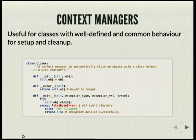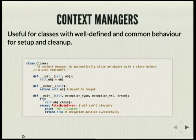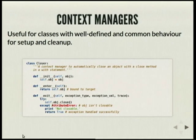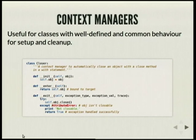This is an example of a context manager where we're closing connections. When entering the context, we're returning the object, but you can create a new connection instance in __enter__, and on __exit__, we're trying to close the connection. If we're handling an exception, we're returning True.